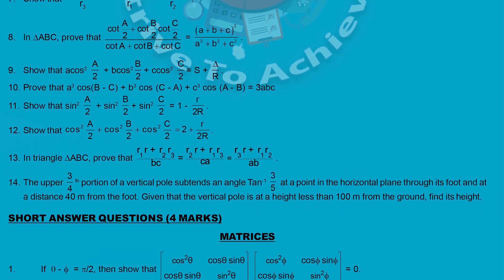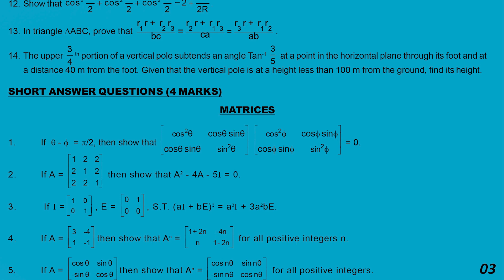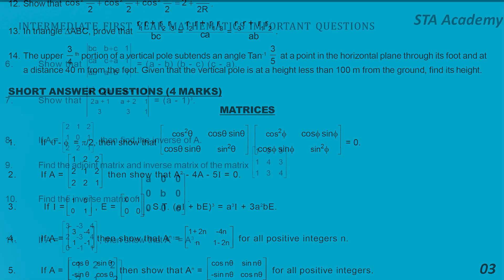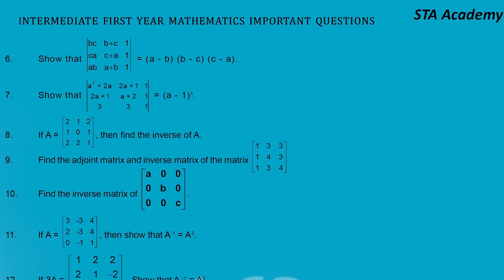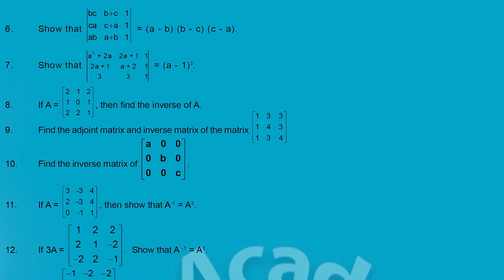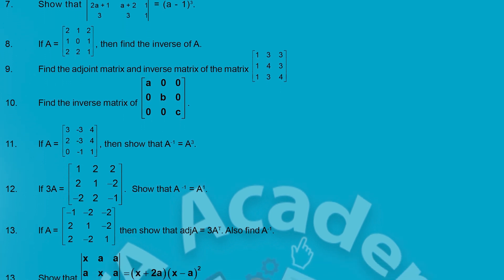After LAQs we have SAQs. Each SAQ carries 4 marks in your board exam. Let us start first with Matrices — I have given 5 SAQs here for Matrices, and we have more which I will show in the next page. The total SAQs are 14 SAQs that I have mentioned here.